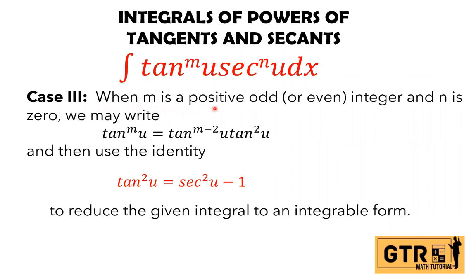For case number 3, when m is a positive, odd, or even integer and n is 0 — meaning we don't have the secant-to-the-n term — we only have tangent to the m times u dx. We may write tangent to the m u as tangent to the m minus 2 u times tangent squared u, then use the identity tangent squared u equals secant squared u minus 1 to reduce the given integral to an integrable form.